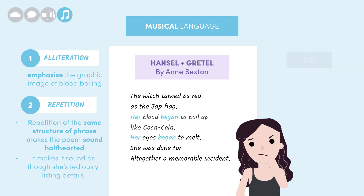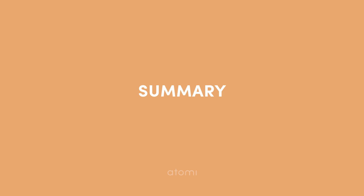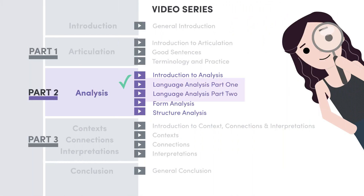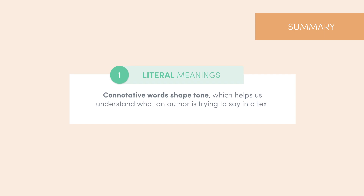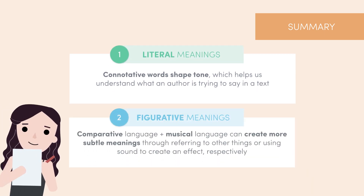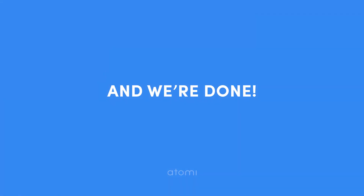To analyze musical language like this, you might need to be a bit creative, as the ways in which it shapes meaning are often quite subtle, but as we've just seen, they will be there. That's it for this first of two videos on language analysis. We looked at literal meanings and figurative meanings — with literal language, connotative words shape tone, which helps us understand what an author is trying to say. With figurative language, comparative language and musical language can create more subtle meanings. In the next video, we'll look at related meanings, then tie it all together with some general advice for your HSC responses.